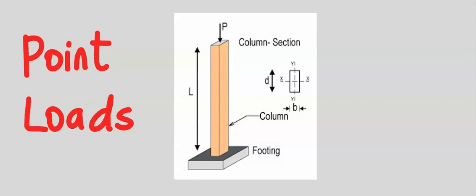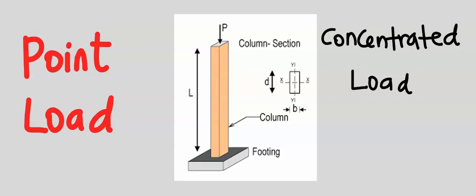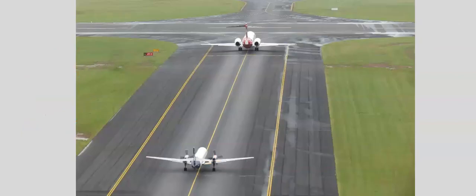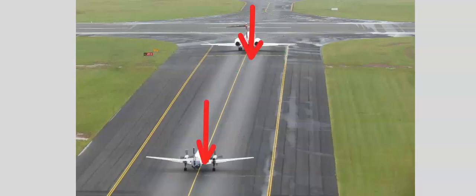Another name for point load is concentrated load. A load or force placed on a small area is known as a concentrated load. If the load is small compared to the area, it can still be considered as a point load. For example, each of these aircraft are large enough to contain many people; however, compared to the large surface area of the runway, each plane can be considered as a point load. A column load acting on a footing is also considered as a point load.